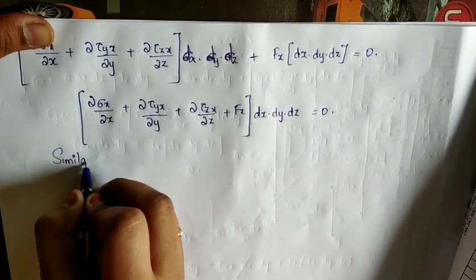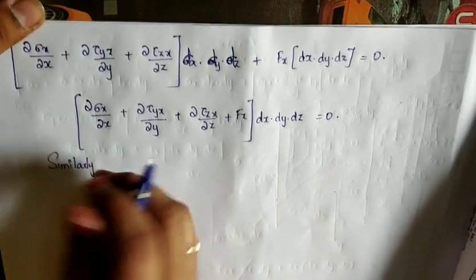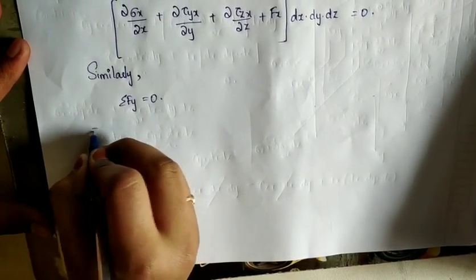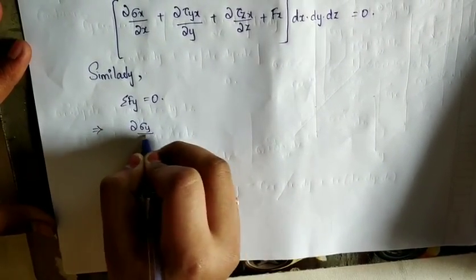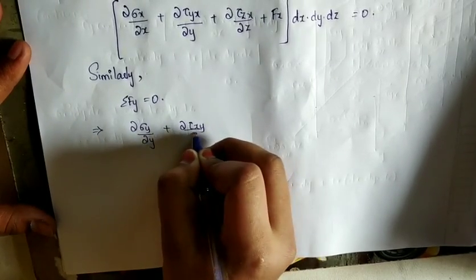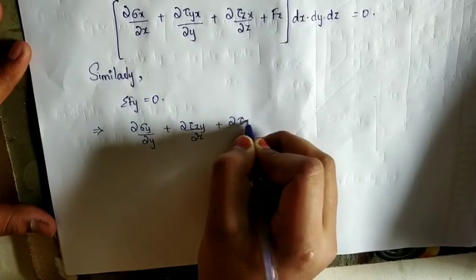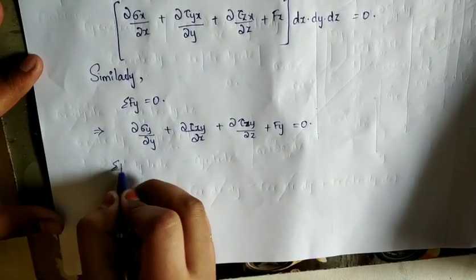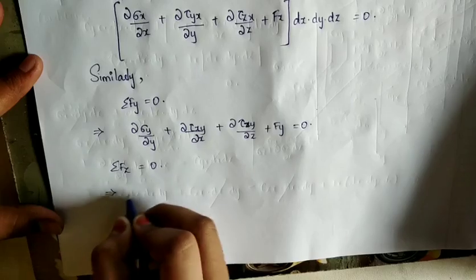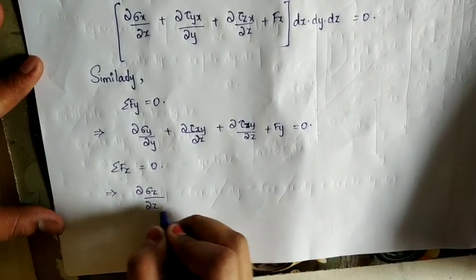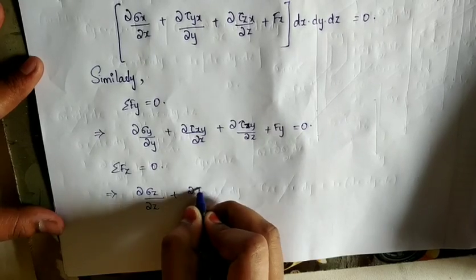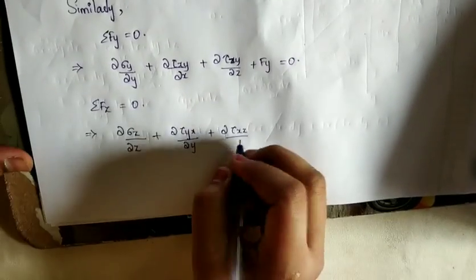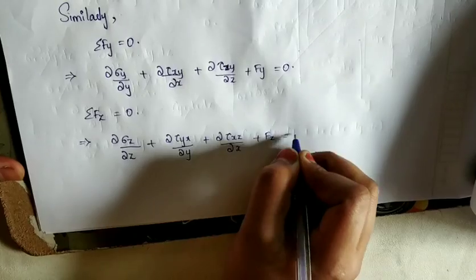Similarly, for Sigma Fy = 0, the remaining equation is: ∂sigma_y/∂y + ∂tau_xy/∂x + ∂tau_zy/∂z + fy = 0. And for Sigma Fz = 0: ∂sigma_z/∂z + ∂tau_yx/∂y + ∂tau_xz/∂x + fz = 0. These are the three 3D equilibrium equations.